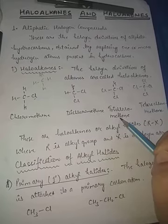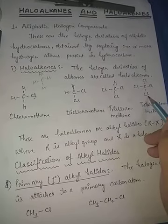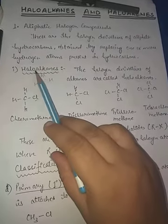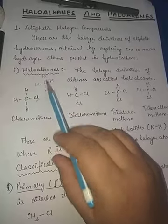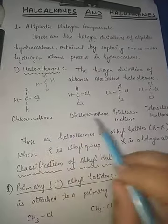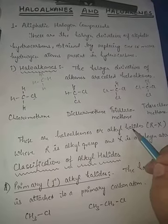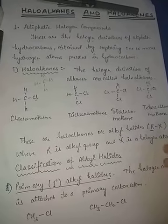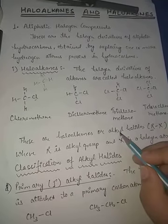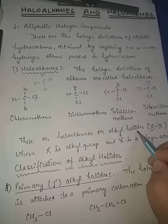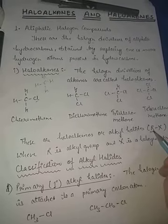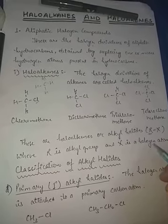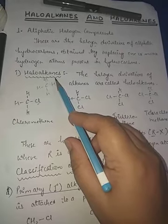If three hydrogens are replaced, it is trichloromethane, and if all four are replaced it is tetrachloromethane. These are all haloalkanes by IUPAC name. Commonly we can also call them alkyl halides - where R is the alkyl group (methyl, ethyl, propyl, butyl, etc.) and X is the halogen atom.